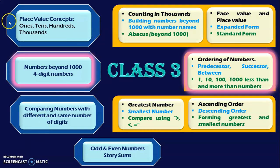For the first learning outcome with respect to place value concepts for 4-digit numbers, I have covered counting in 1000s and building numbers beyond 1000 with number names in one video. And in another video, I have dealt with abacus for numbers beyond 1000, the face value and place value concepts for 4-digit numbers, and how to write 4-digit numbers in expanded and standard form. The links for those two videos are given below in the description box or you can find them in the card section.